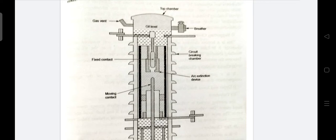It is observed that oil serves two purposes. Firstly, it acts as an arc quenching medium and secondly it insulates live parts from the earth. It is found that only a small percentage, about 10% of oil is used for arc extinction process and major part is used for insulation purpose.